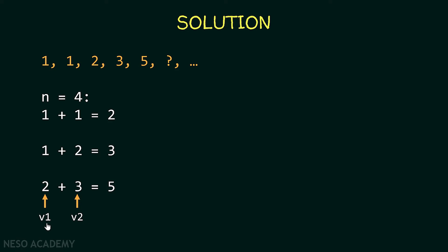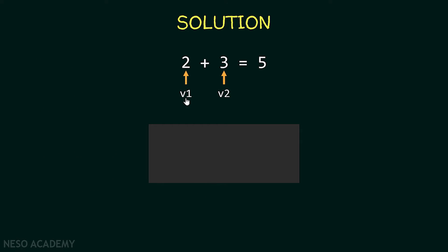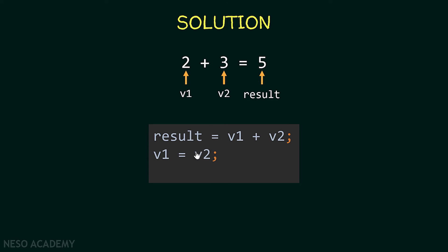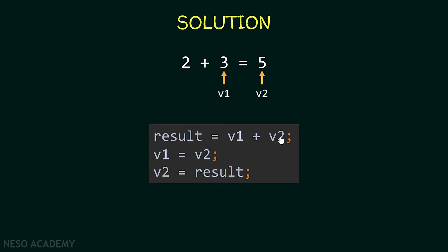You might ask how we move v1 and v2. Suppose v1=2 and v2=3. We store result = v1+v2, so result=5. Then we set v1=v2, so v1 becomes 3. Then v2=result, so v2 becomes 5. Now v1=3 and v2=5, so re-executing gives result=3+5=8, and so on. We want to execute this code n-2 times.